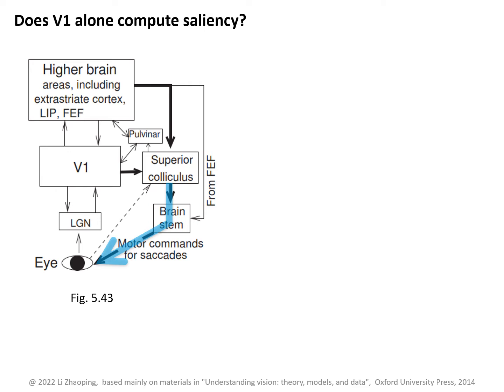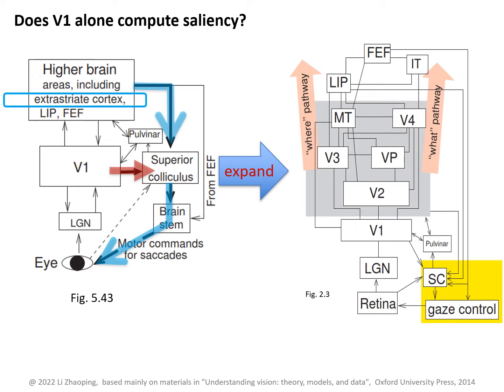From this diagram, we see this control by the superior colliculus to move the eyes. V1 projects to this control, and so does higher brain areas, including the extrastriate cortex. Expanding this diagram a little bit, the extrastriate cortical areas include V2, V3, V4, MT, et cetera. V1 projects to the superior colliculus, and these extrastriate cortical areas also project to the superior colliculus. What kind of control do they contribute additionally?